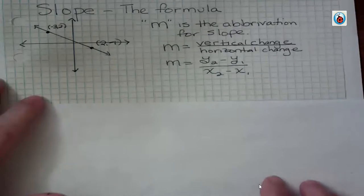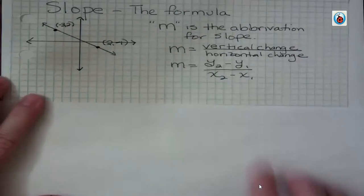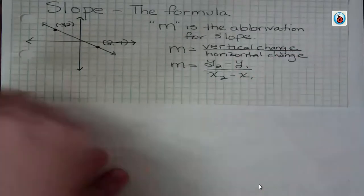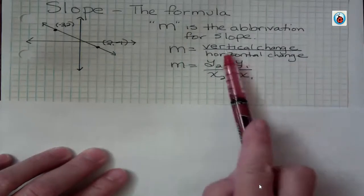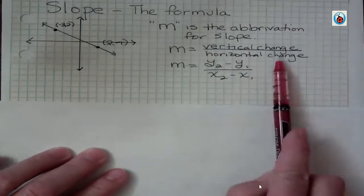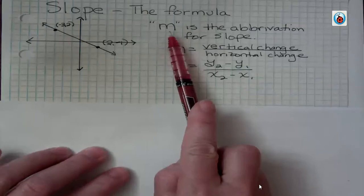The rise is a shorthand way of saying vertical change and the run is a shorthand way of saying horizontal change. But we're always looking for the change in the y and the change in the x. We use m for an abbreviation for slope.